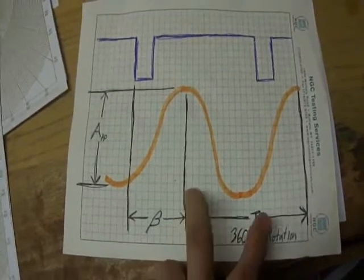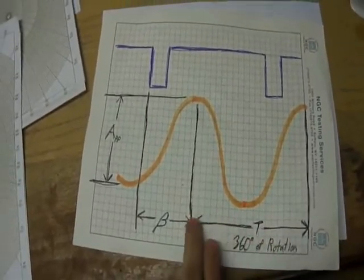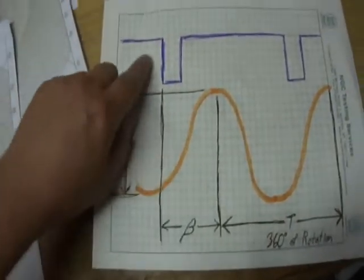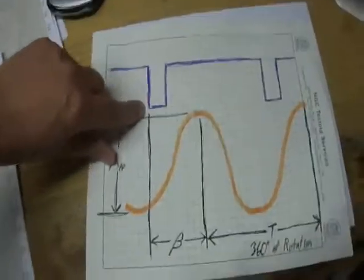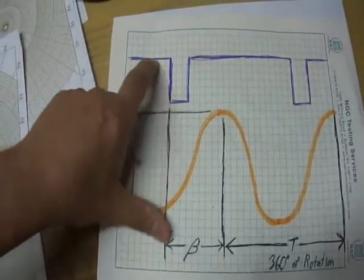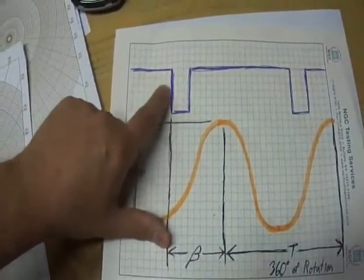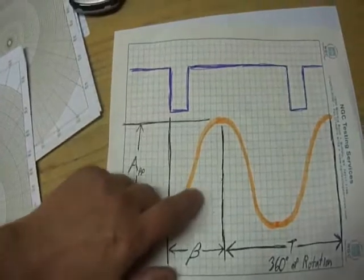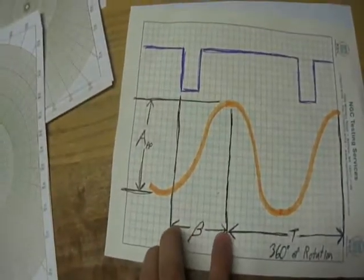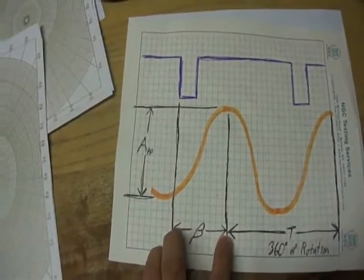That tells me how many divisions are in 360 degrees of rotation. So, using that information, now I can take a reading, here I call beta, from the negative going pulse of the key phaser to the next positive peak. That will be my beta reading, so that will be a reading of time.